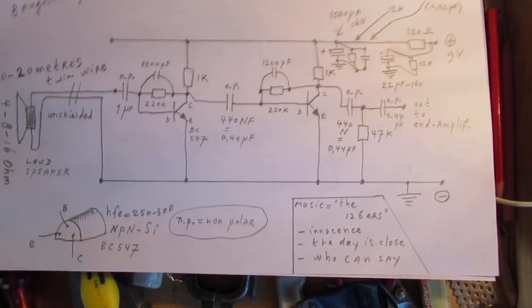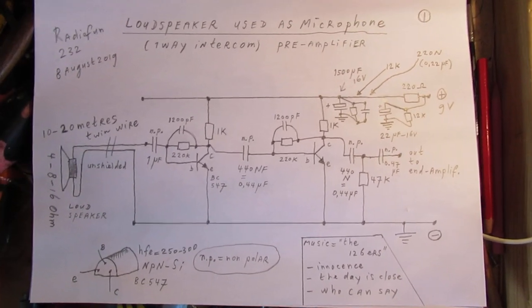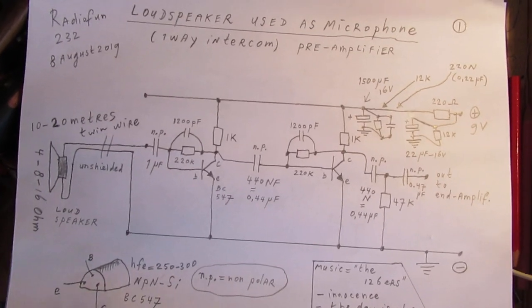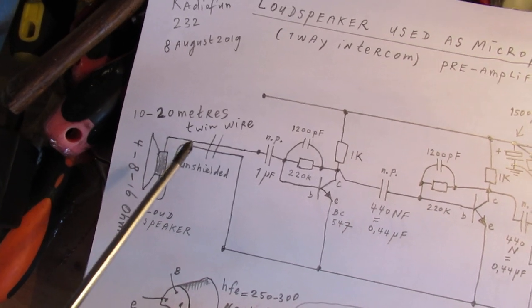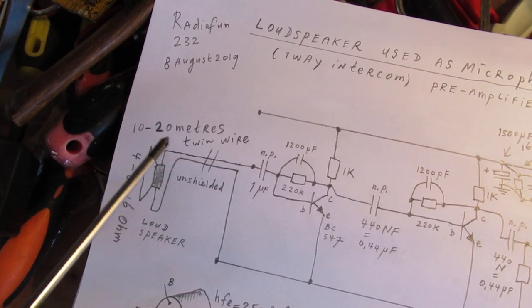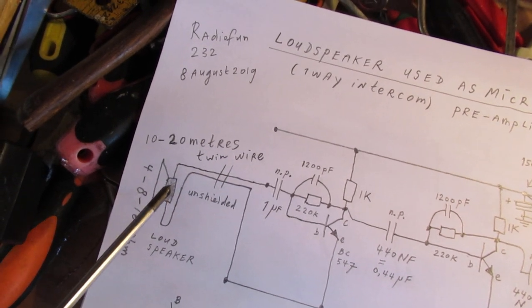This is the schematic. It's very easy to make, and the good thing of it all is that we have here that loudspeaker. We can use say 10 or 20 meters of wire, and the whole input is very, very low impedance.